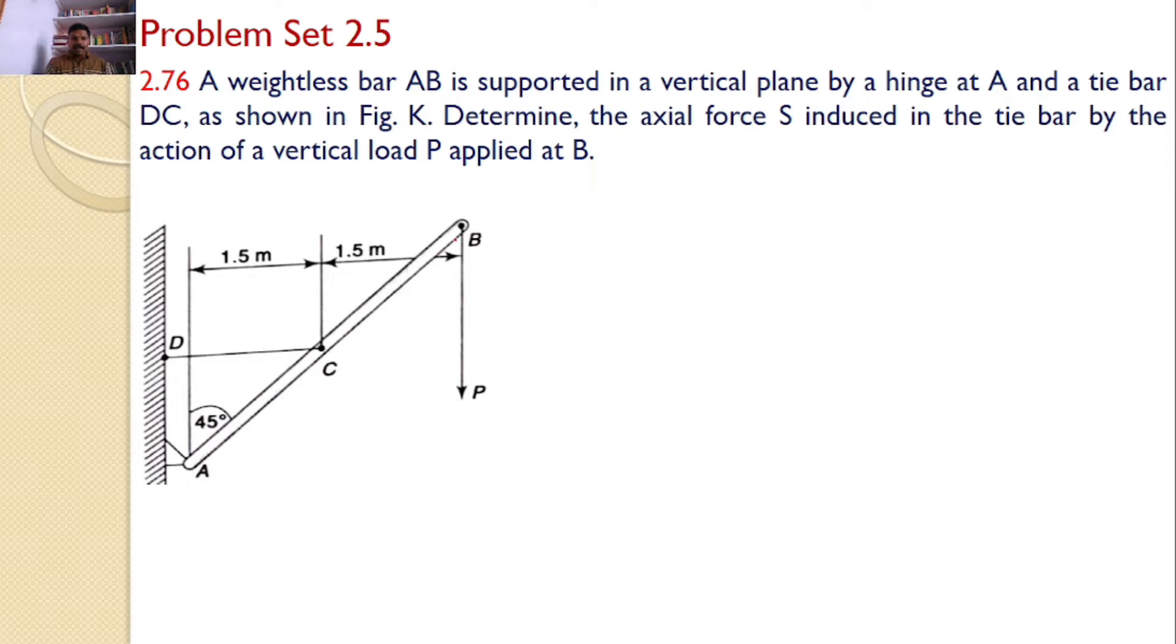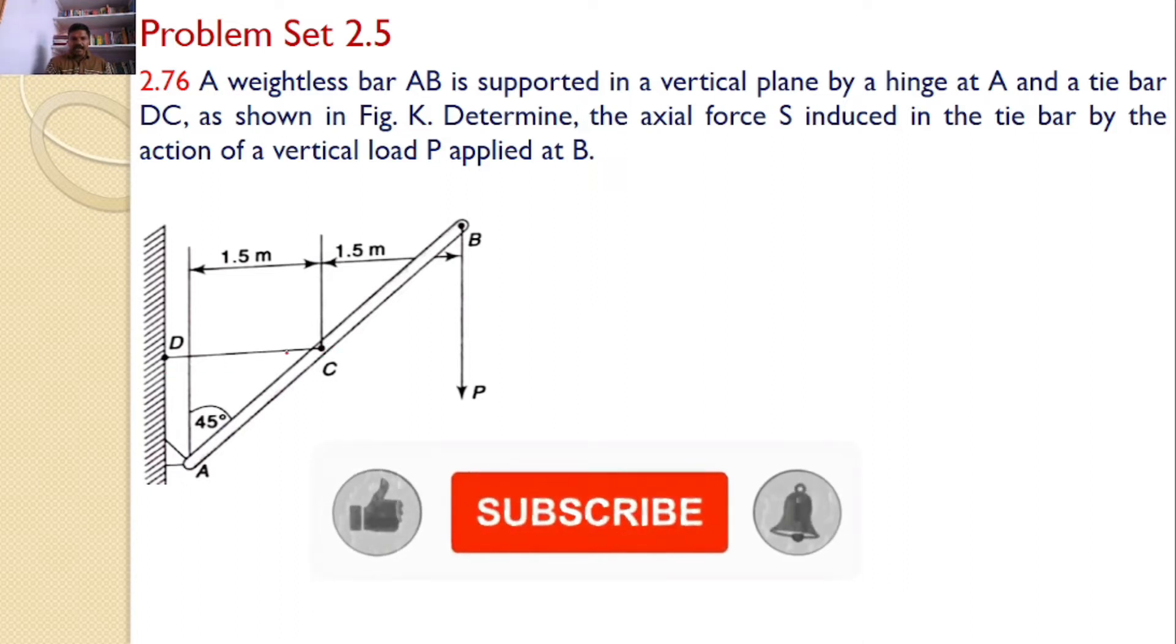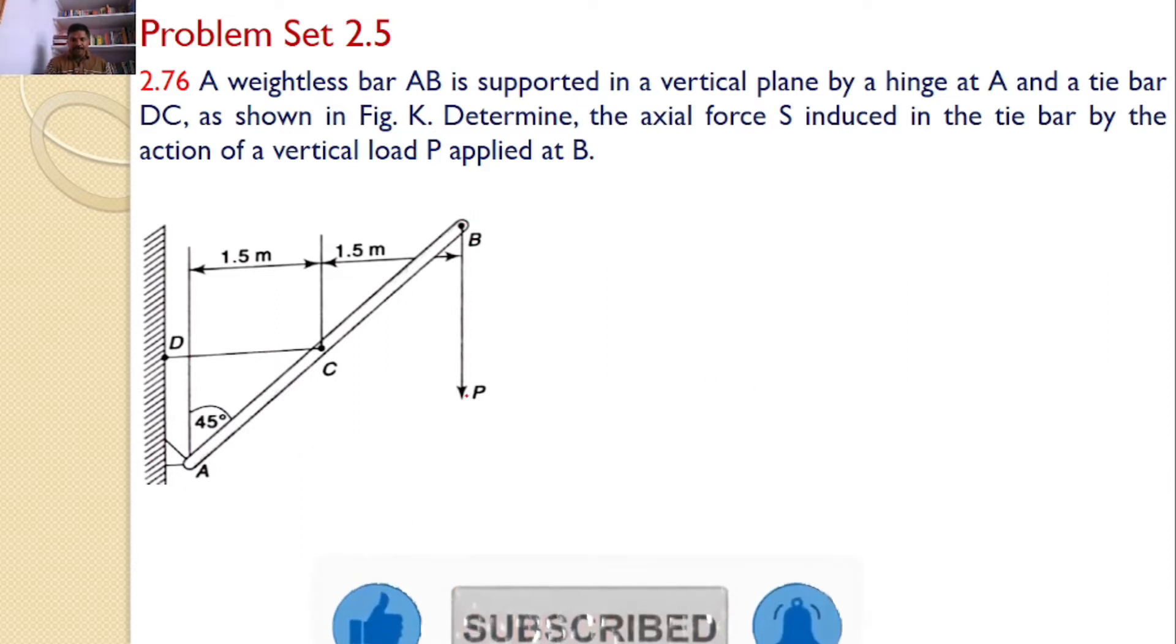That means a bar AB is hinged at A and it is also connected with a tie bar like this and it is supported by a force P. Our interest is to find the axial force in the tie rod.